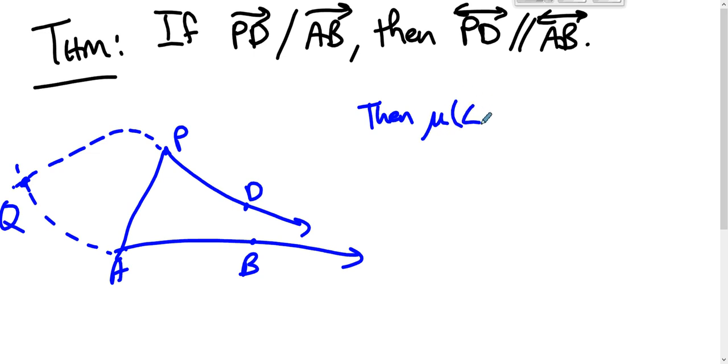The measure of angle APD is greater than the measure of angle AQB by the exterior angle theorem. AQP is a triangle. APD is an exterior angle for triangle AQP. So the exterior angle must have a bigger measure than either of the remote interior angles. Well, what does that mean?